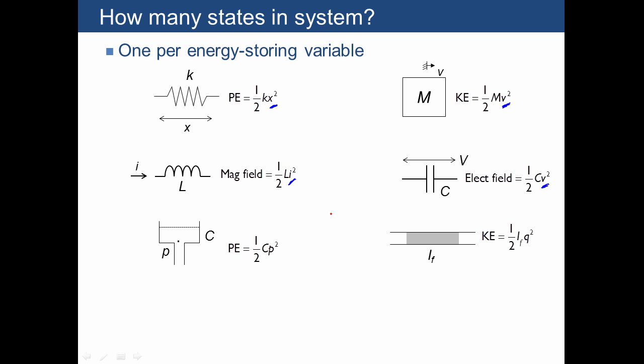For a fluid system, the potential energy is one-half Cp squared, where p would be the energy-storing variable. For a fluid inertance, it would be one-half I times q squared, where q is referring to the flow rate through the pipe. Finally, for thermal systems, there's only one energy-storing variable. In fact, temperature T is already a form of kinetic energy, and so that could be treated as an energy-storing variable.